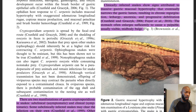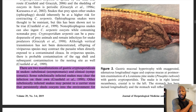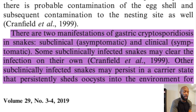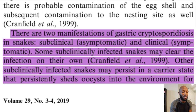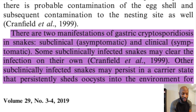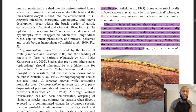Looking at clinical manifestations, there are subclinical and clinical forms. Subclinical is also known as asymptomatic. Some subclinically infected snakes may clear the infection on their own. The scary part is you can have subclinically infected snakes that are carriers and are spreading the parasite without experiencing any side effects - and they can be carriers and spread this for over 20 years, probably for their whole lifespan.